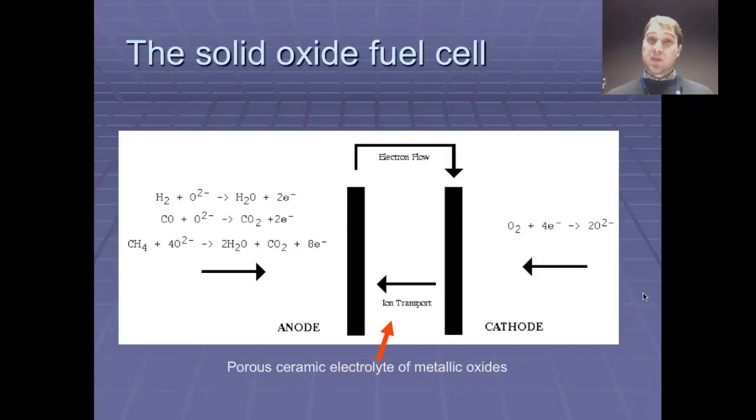So another fuel cell is called the solid oxide fuel cell. The solid oxide fuel cell can use a variety of fuels depending on what's available really. Using oxygen on one side like we had with the hydrogen-oxygen fuel cell. Here you can use hydrogen, you can use carbon monoxide, you can use methane. So this one's handy in that a variety of fuels can be used.